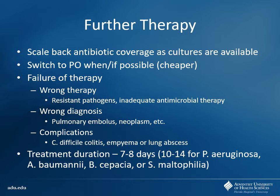Once you get the cultures back, that's when you can start to scale down therapy and try to switch over to PO if possible — it's going to be better from a cost standpoint. What's the other benefit of going from IV to PO? Decreased infectious risk — because any time you have an IV line in a patient, the longer you have it there, it's another vector for bacteria to get in. Now, if you have failure of therapy — the patient's not improving — why did my therapy fail? It could be the wrong therapy due to resistance, which your culture should show. It could be inadequate antimicrobial therapy — maybe you didn't account for the patient actually having MRSA pneumonia. Or it could be a wrong diagnosis — maybe it wasn't actually pneumonia, it was actually a PE they developed.